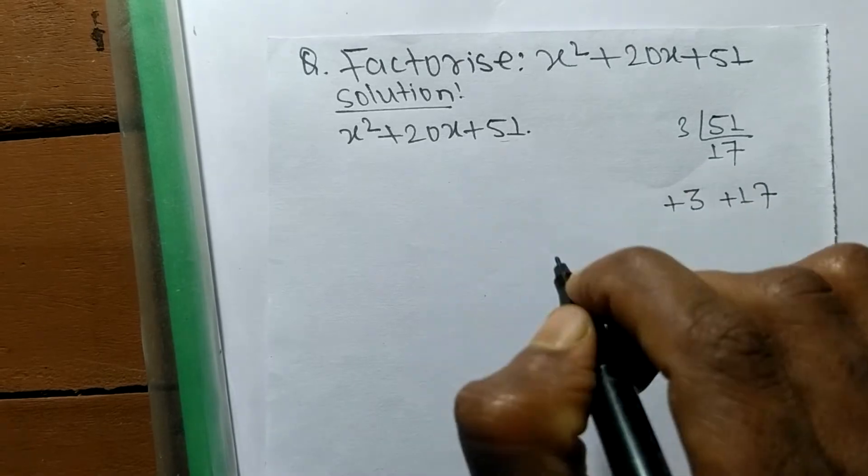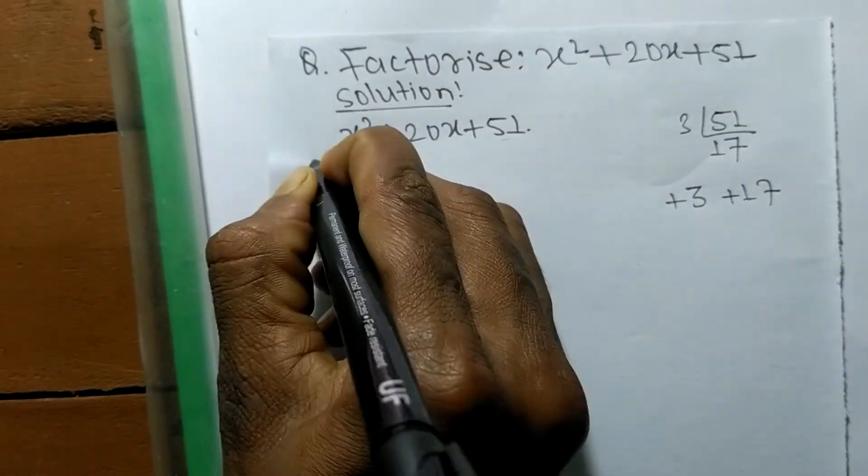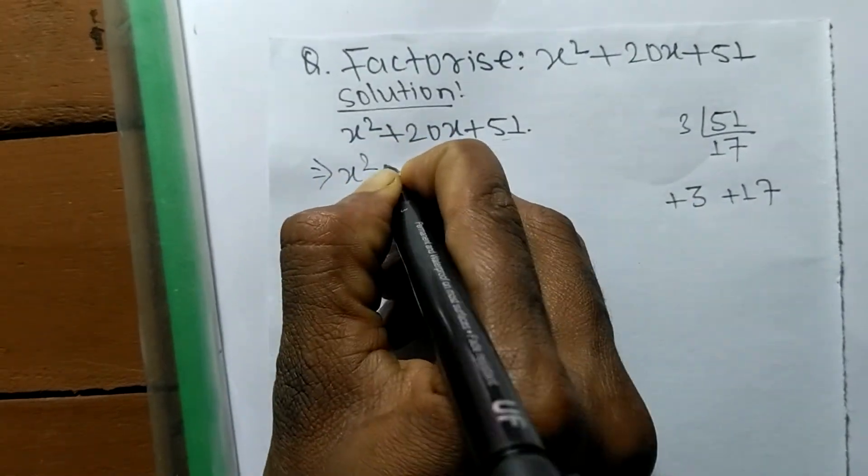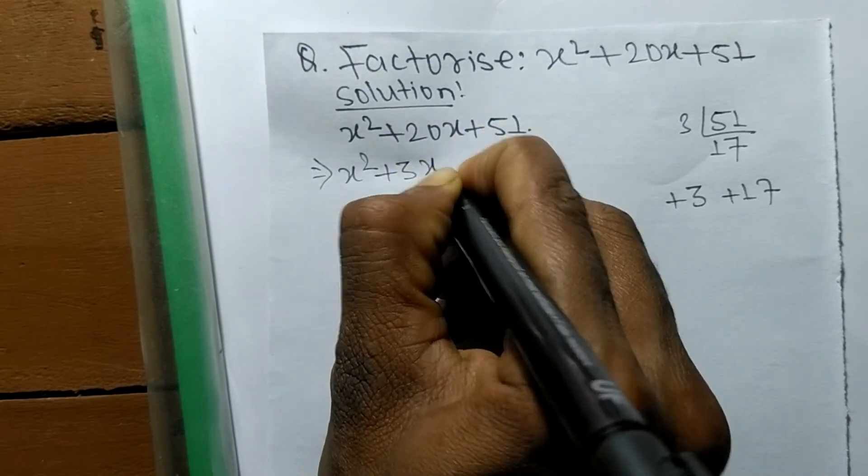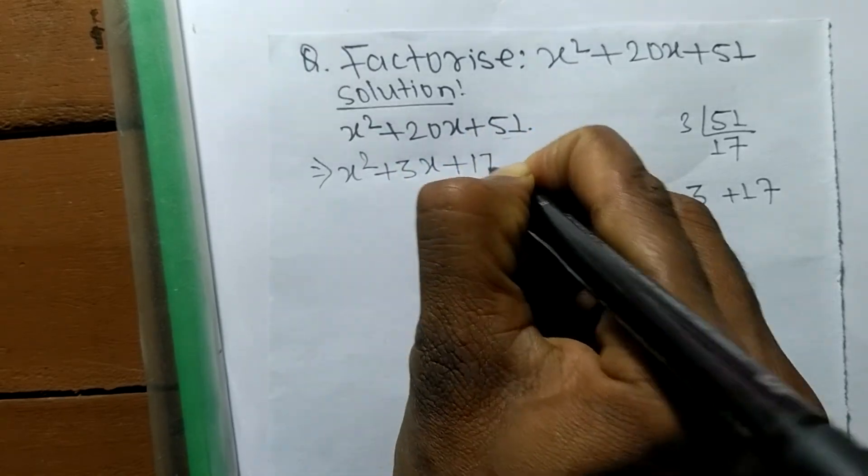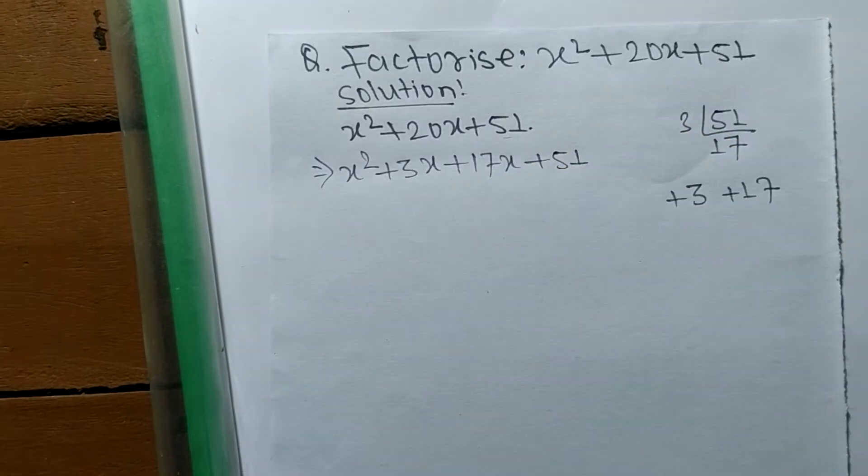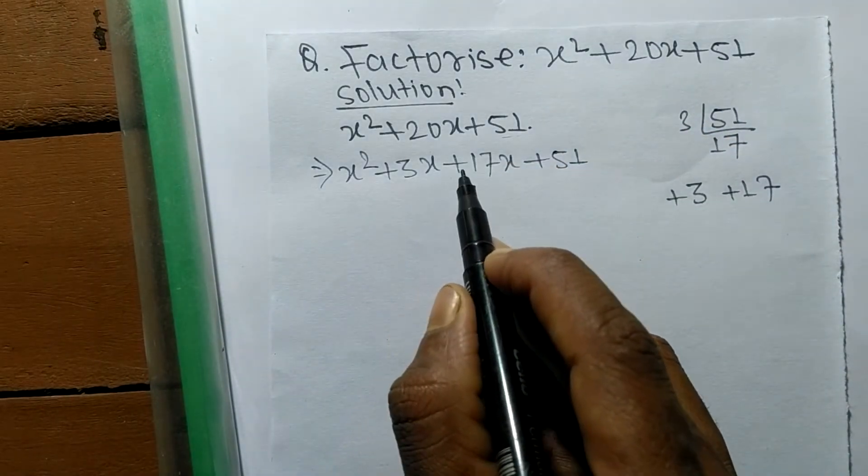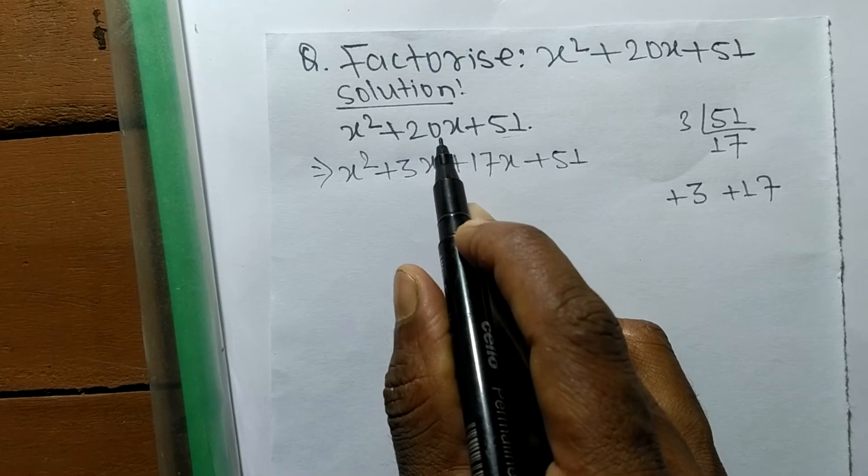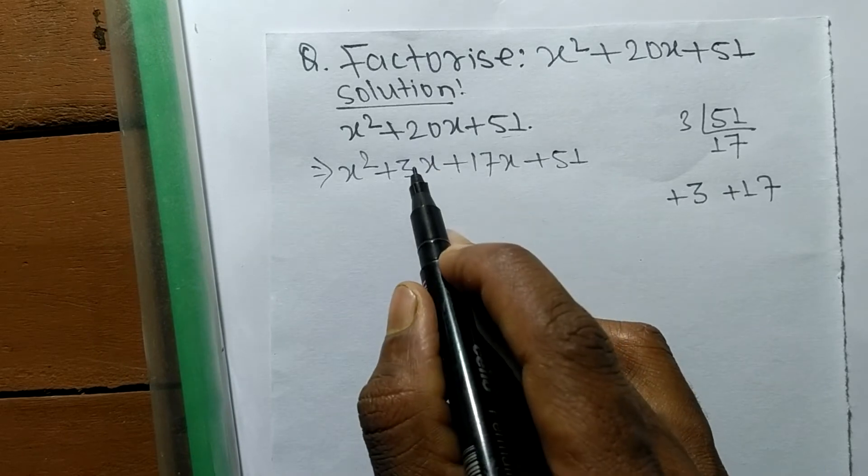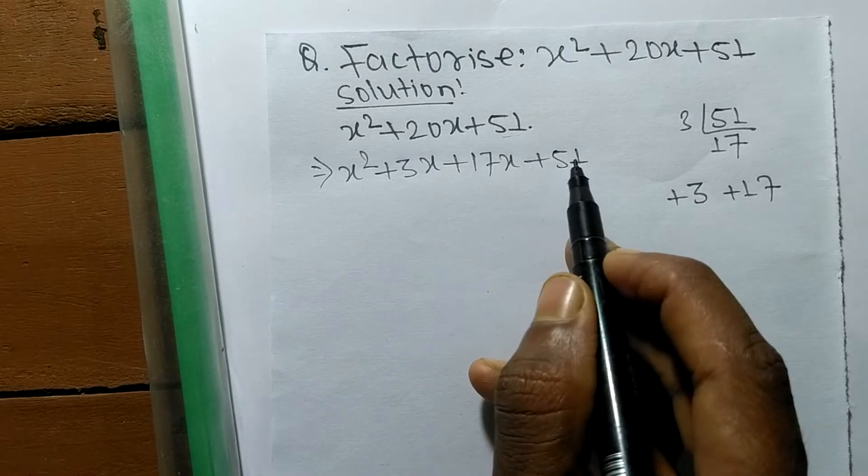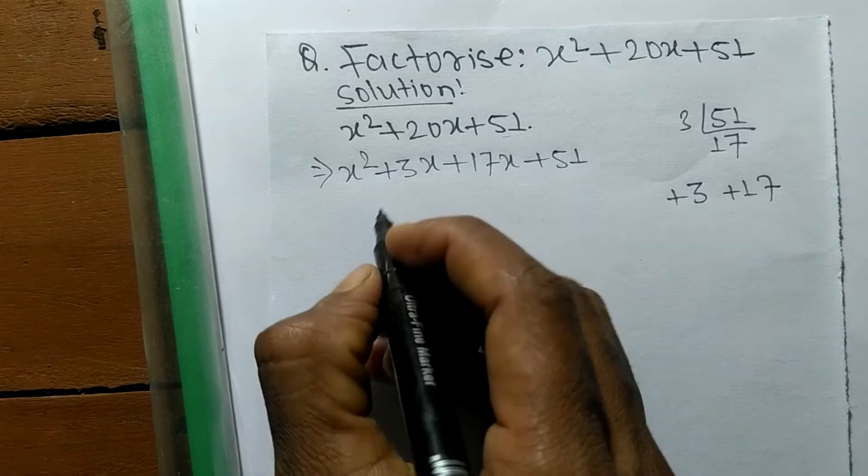3 plus 17 equals 20. So we can write it as x² + 3x + 17x + 51. 3x plus 17x equals 20x and 3 times 17 equals 51. Now we have to find out common factors in pairs of expressions.